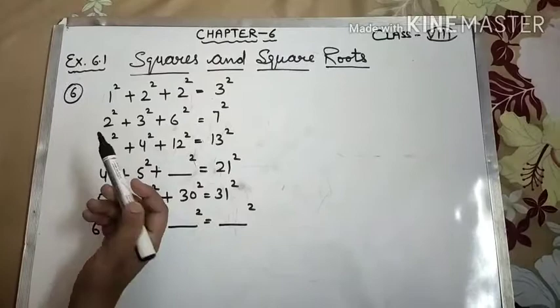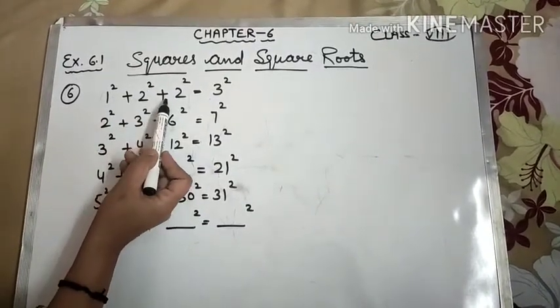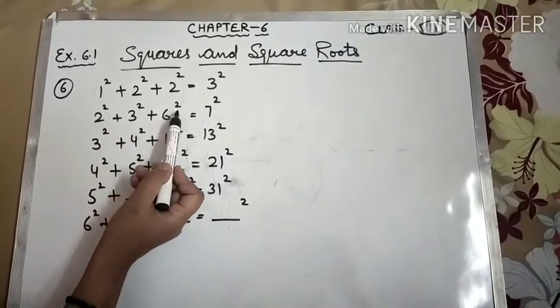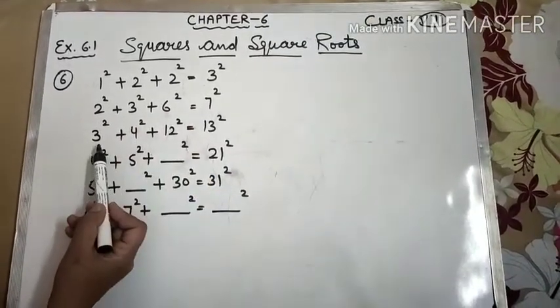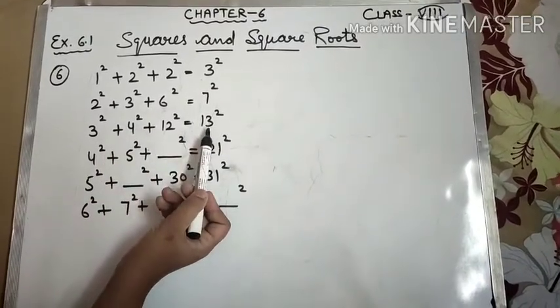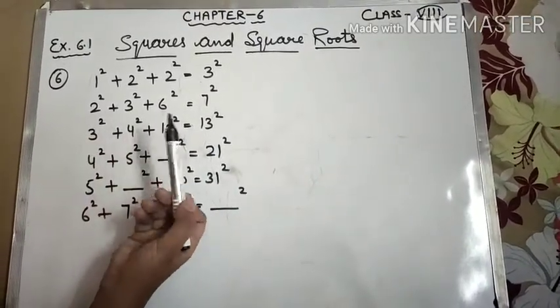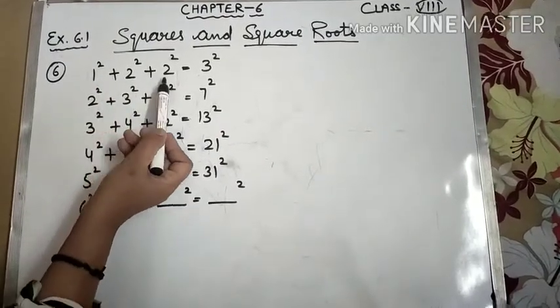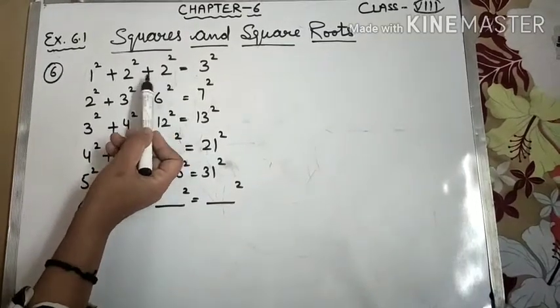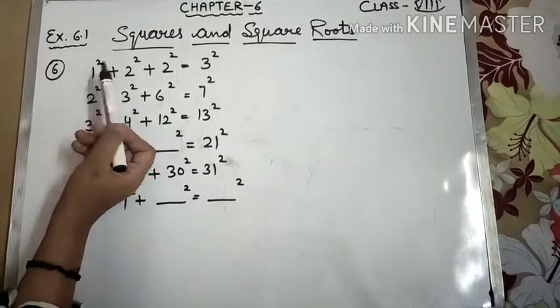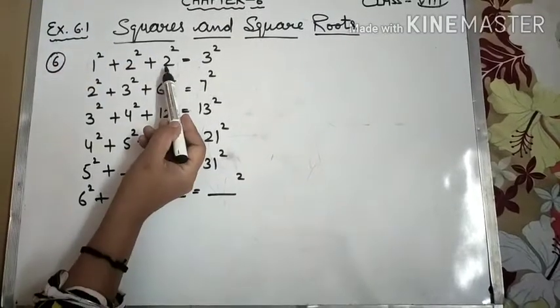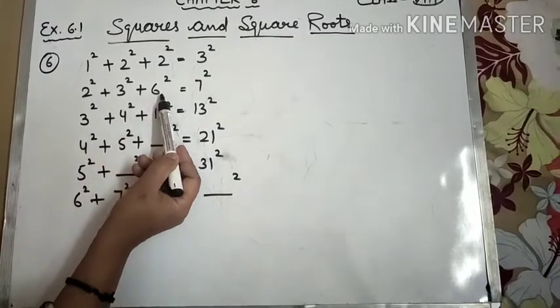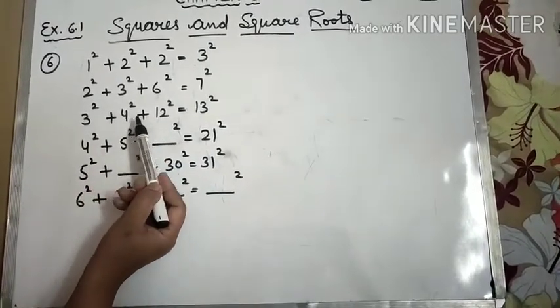Using the given pattern, find the missing numbers. We have to follow this pattern and complete the blanks. Look at the pattern: 1² + 2² + 2² = 3², 2² + 3² + 6² = 7², 3² + 4² + 12² = 13². As I'm learning this, I have a concept - the third term is 1×2, multiply the first two terms. 1×2 is 2, 2×3 is 6, 3×4 is 12.